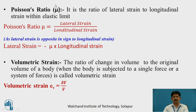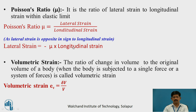Poisson's ratio is denoted by mu. It is the ratio of lateral strain to longitudinal strain within the elastic limit, equal to lateral strain divided by longitudinal strain. So lateral strain equals minus mu times longitudinal strain, because lateral strain is opposite in sign due to being in the opposite direction to the longitudinal strain.